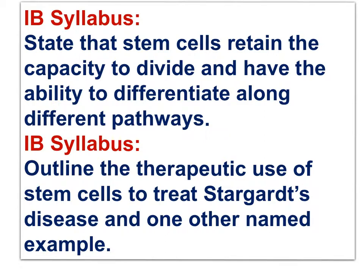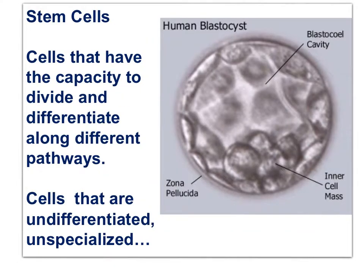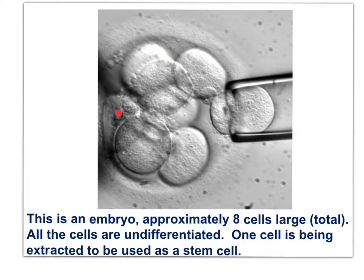As we move toward the end of the movie, we return to material from the cells unit that intersects biotechnology. Stem cells retain the capacity to divide and have the ability to differentiate along different pathways. The handful of cells that comprise an early embryo are stem cells — these cells could be harvested and cultured to differentiate into tissues that might repair damaged tissues.